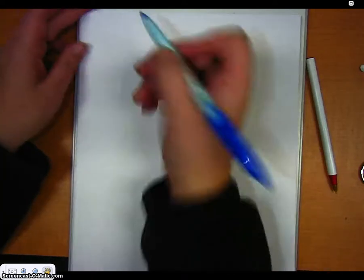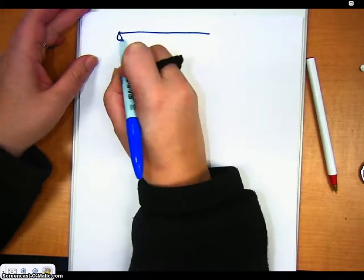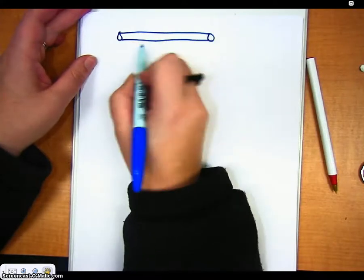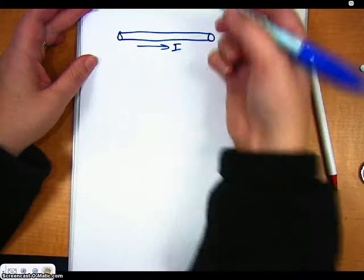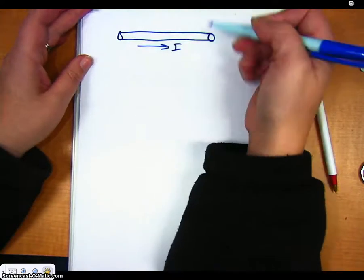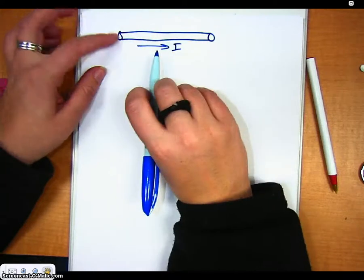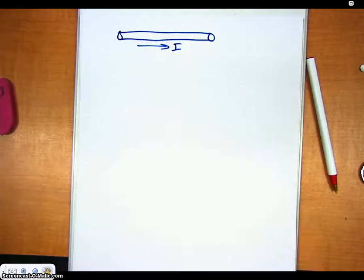We've already learned that when an electrical current is running through a wire, it produces a magnetic field. So if we have a wire and there's an electrical current running through it, then we're going to get this magnetic field around the outside of that wire, sort of perpendicular to the current and to the wire.